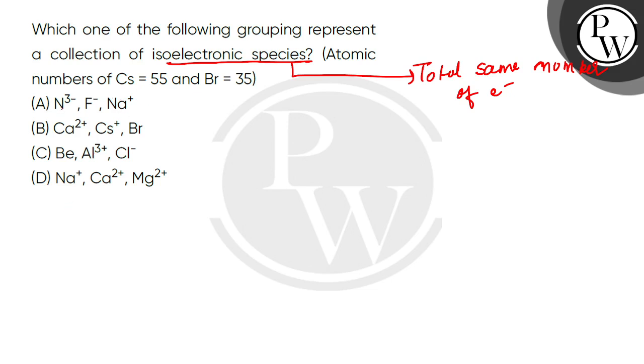For option A: Nitrogen atomic number is 7, so N3- has 10 electrons. Fluorine atomic number is 9, so F- has 10 electrons.